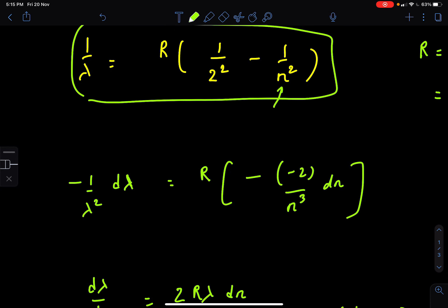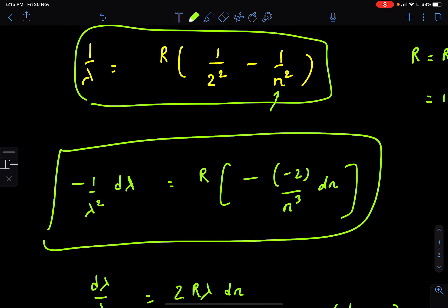Okay. So differentiating both the sides here, R is the Rydberg constant, capital R. And so we get this. Now, what does this tell us? This tells us what is the change in lambda because of change in n.